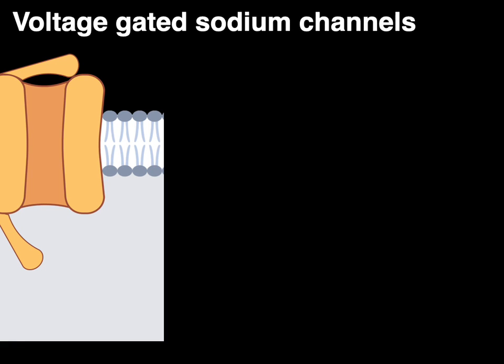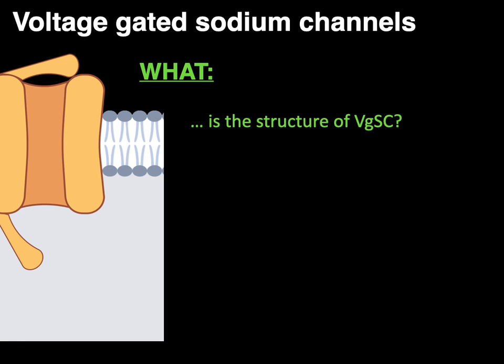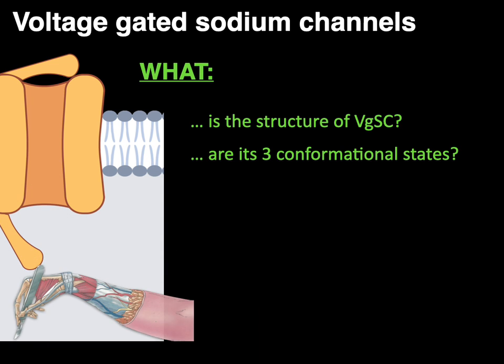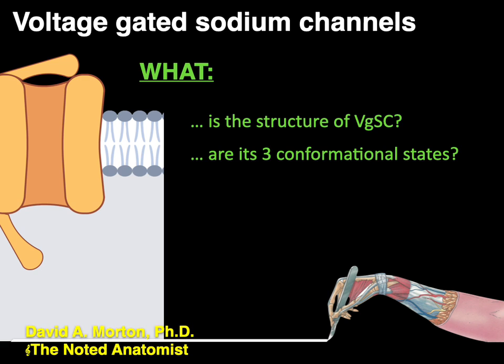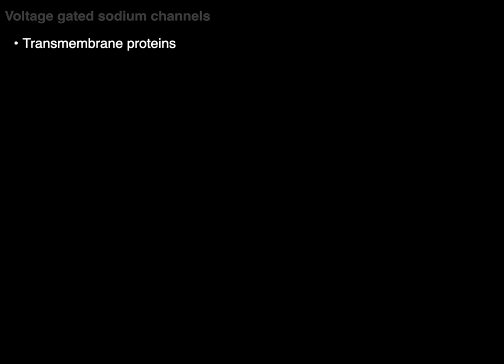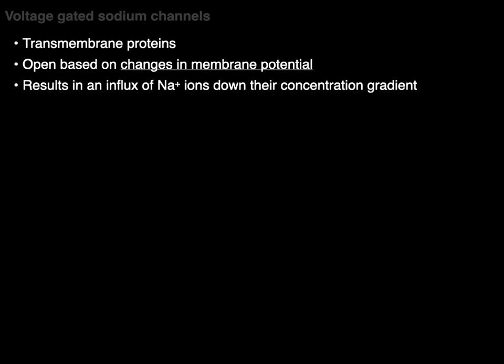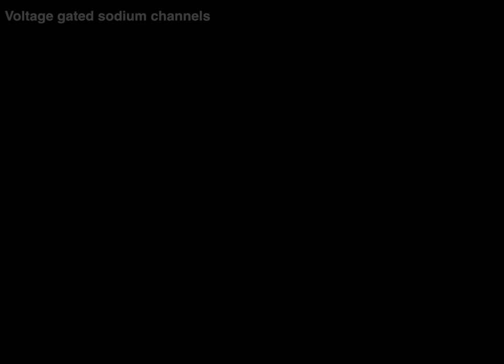We're going to talk about voltage-gated sodium channels and answer the questions: what is the structure of a voltage-gated sodium channel and what are its three conformational states? My name is Dr. Morton and I'm the noted anatomist. A voltage-gated sodium channel is a transmembrane protein that opens based on changes in membrane potential, resulting in an influx of sodium ions down their concentration gradient.